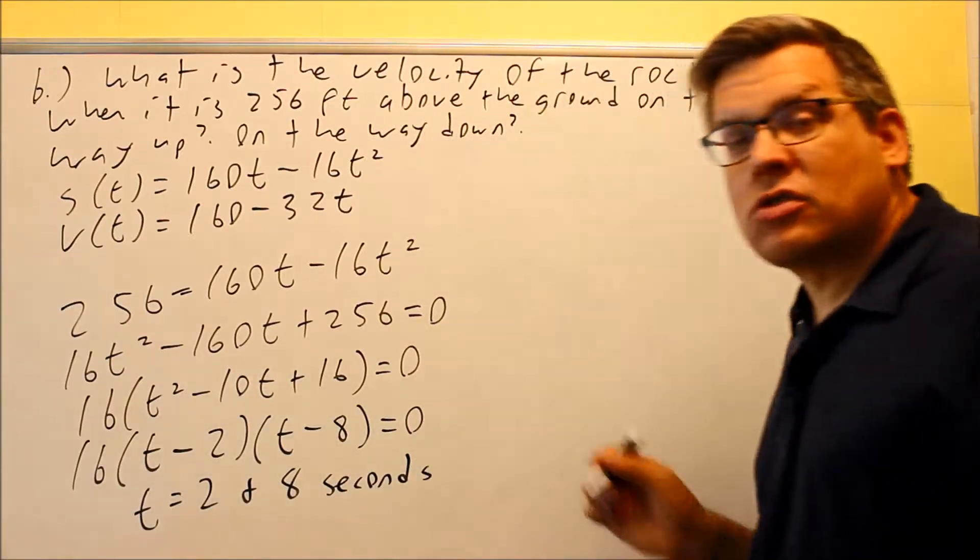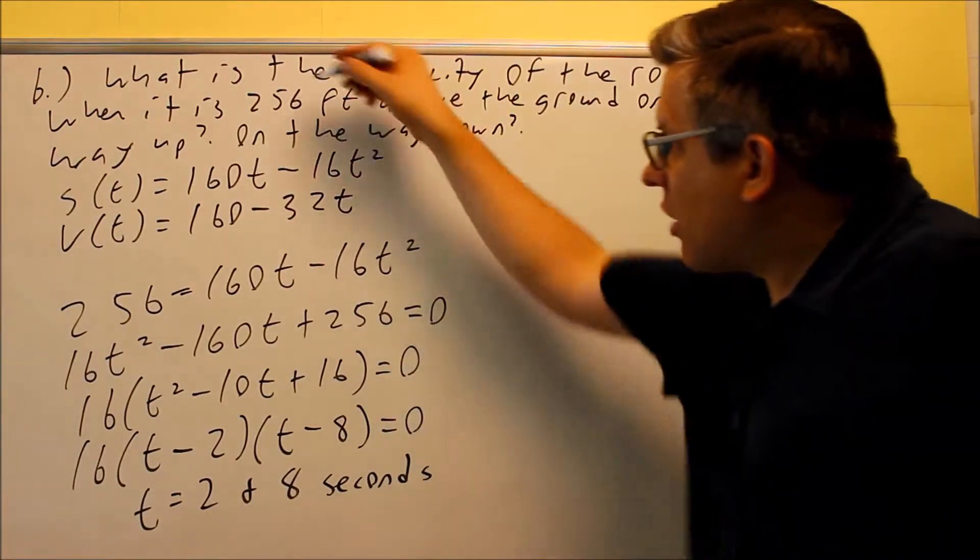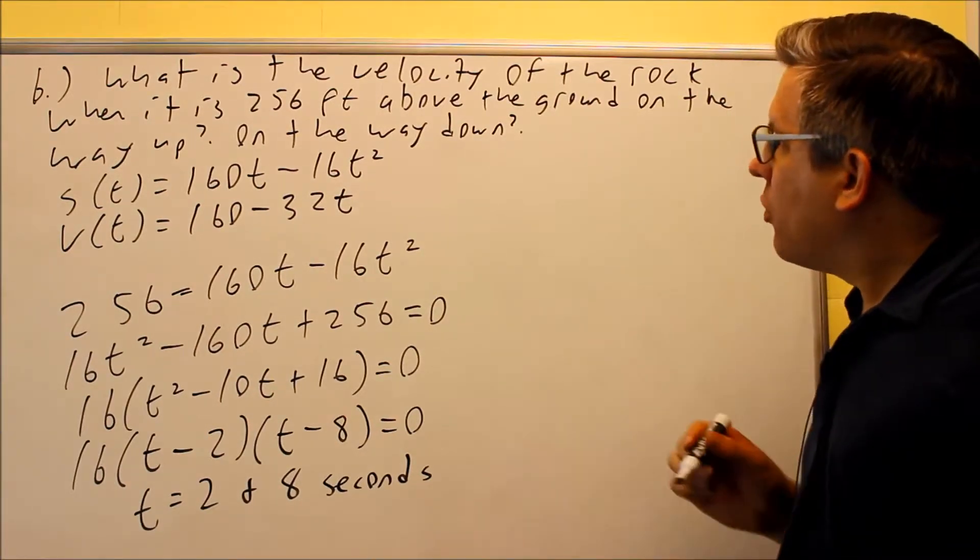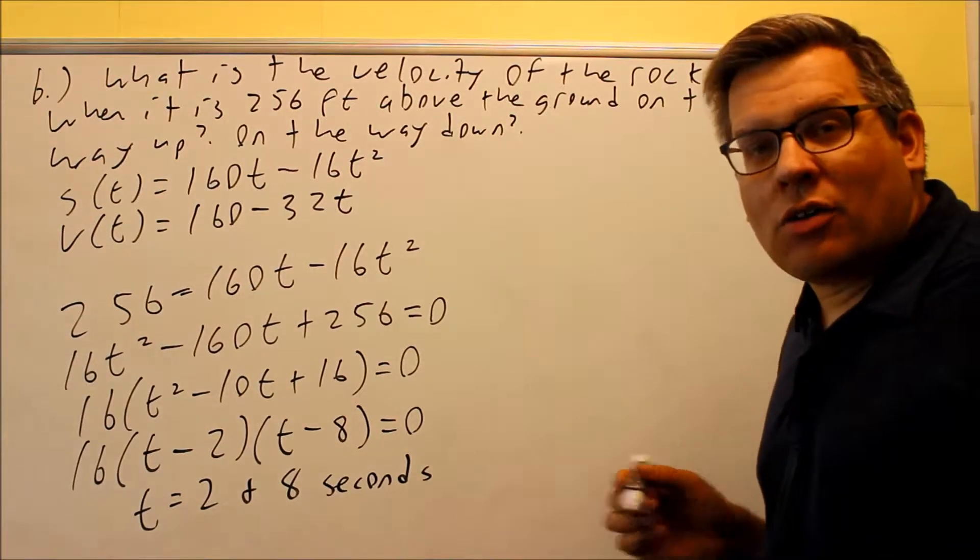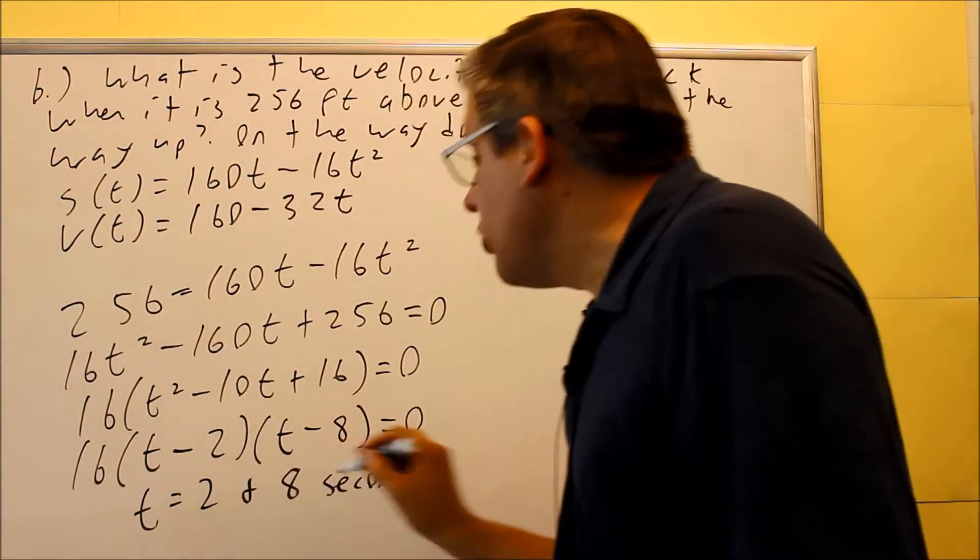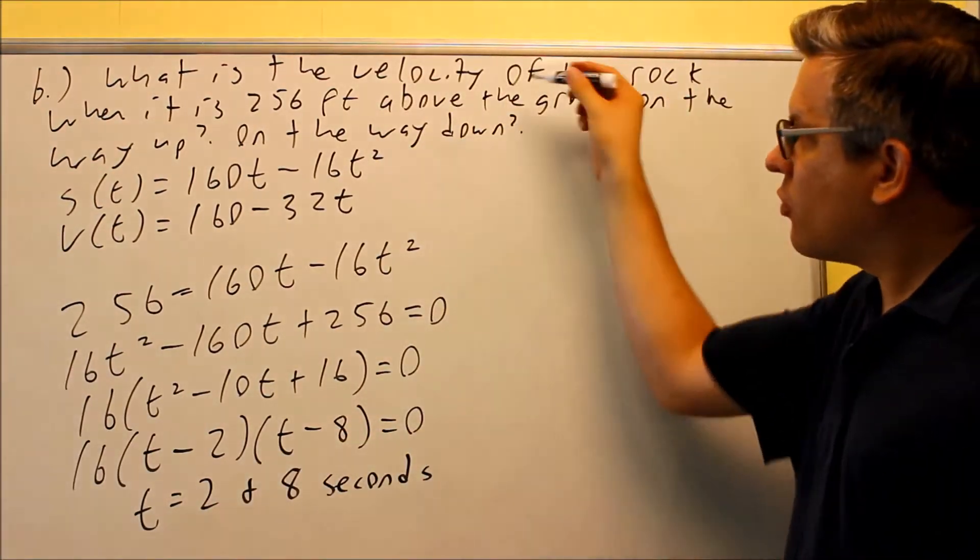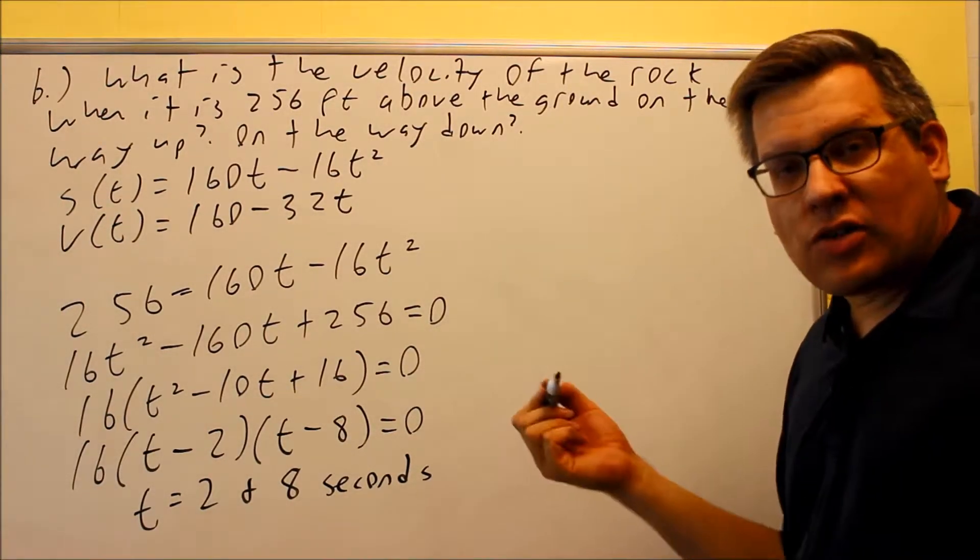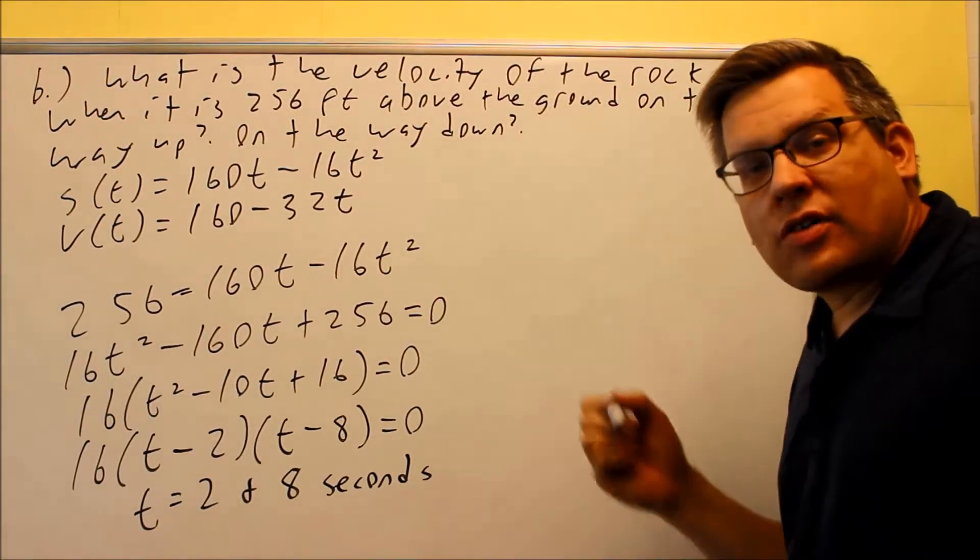So we found the times at which the height is exactly equal to 256. So now I have to figure out whether it's moving up or moving down at these different velocities. So I'm going to be putting in 2 and 8 into our velocity function, since that's what it's asking us for. If it's moving up, that means your velocity is positive. If it's moving down, velocity is negative.